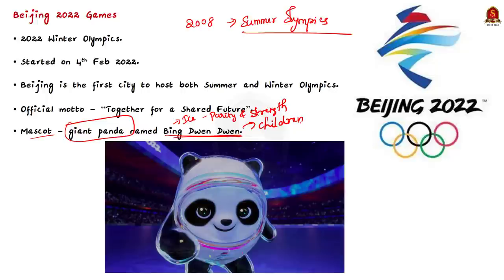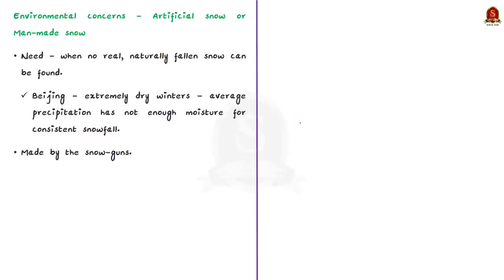Now, let us see an issue associated with the Beijing 2022 Games. There are environmental concerns associated with Winter Olympics. Among those, one of the prominent one is the use of artificial snow or man-made snow. Artificial snow is needed when no real or naturally fallen snow can be found or whatever snow is found is not enough for the games to be conducted. If we take Beijing itself, it has extremely dry winters.